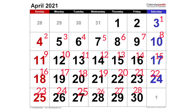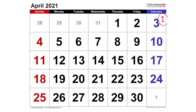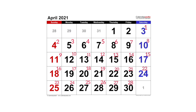Looking at the April 2021 calendar on screen, the days of the month are written in black, while the cycle day numbers are written in red superscript. Let's assume I got my last period on April 3rd — that makes April 3rd Day 1 of my cycle, April 4th Day 2, April 5th Day 3, and so on, continuing until April 30th, which is Day 28 of my cycle.